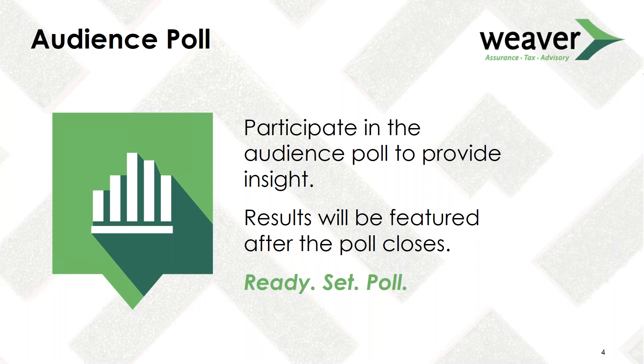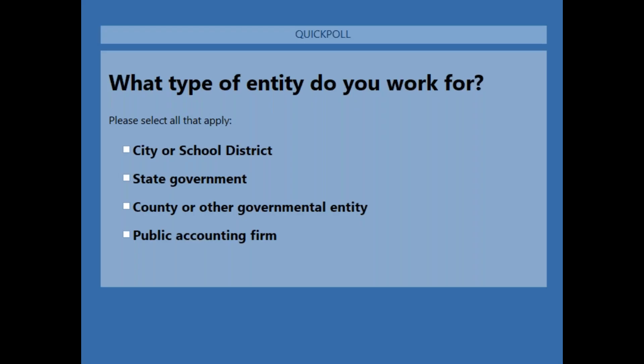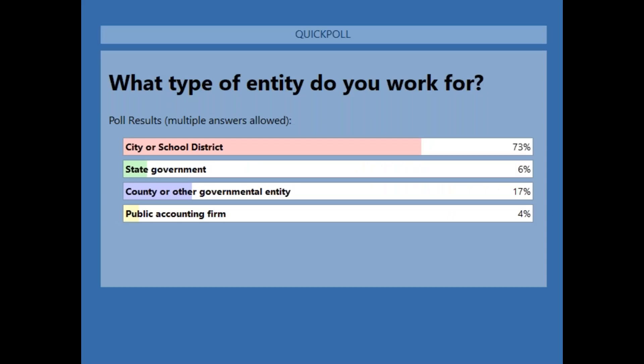We're going to launch our very first audience poll question: What type of entity do you work for? A, a city or school district. B, a state government. C, accounting or other governmental entity. Or D, a public accounting firm. The results show that the majority of you work for cities or school districts. It's nice to know who we're speaking with this afternoon.